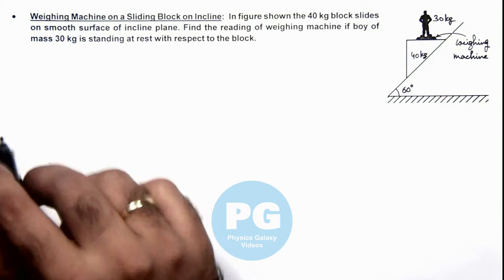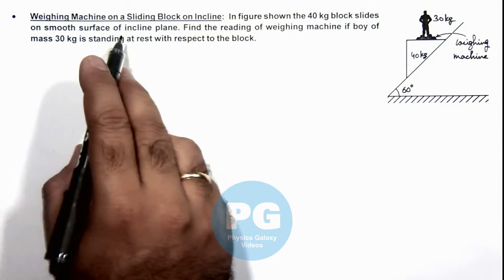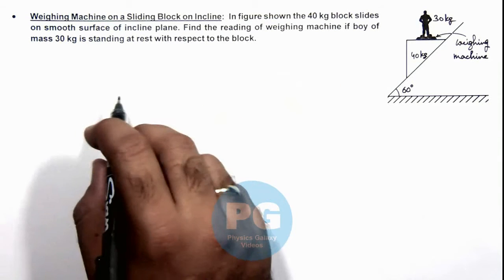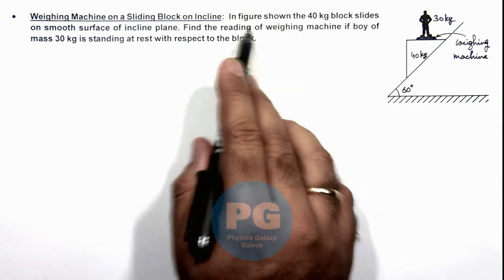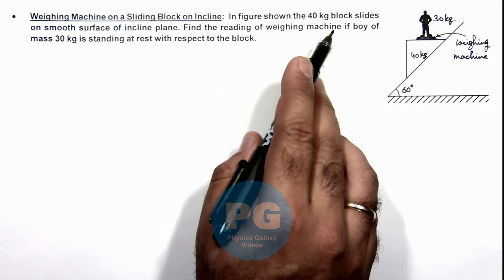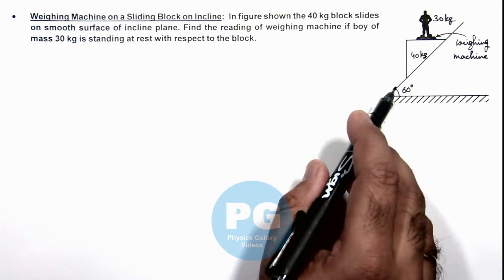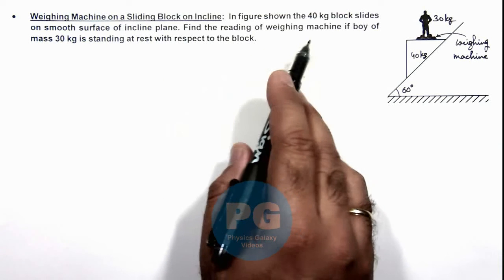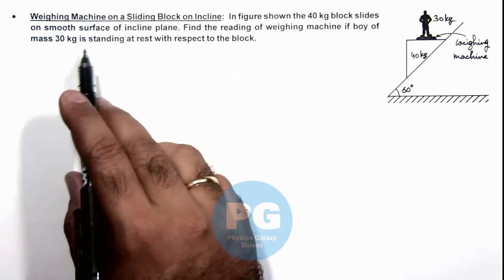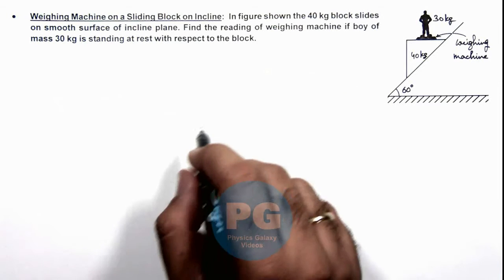This illustration is analyzing the weighing machine on a sliding block on an incline. Here you can see the figure shows a 40 kg block which is sliding on a smooth incline of this inclined plane. We are required to find the reading of weighing machine if the boy of mass 30 kg is standing at rest with respect to this 40 kg block.